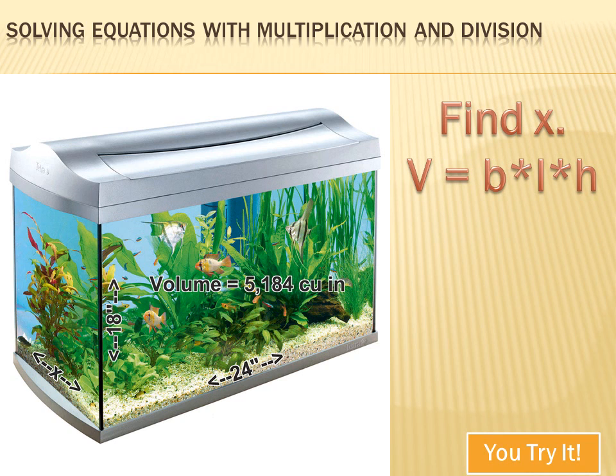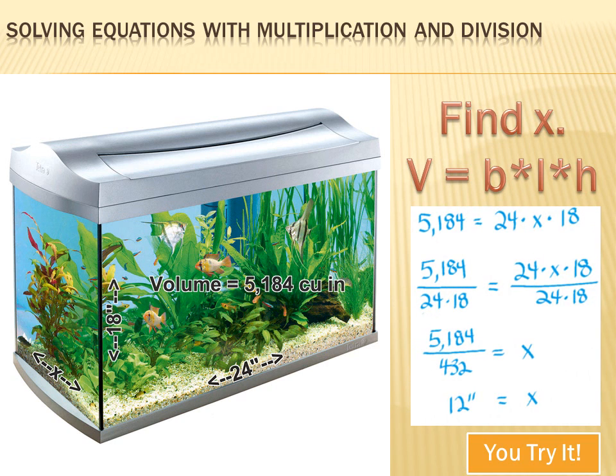The volume of this aquarium is 5,184 cubic inches. And we know that its width is 24 inches and its height is 18 inches. So find x. Well, first thing to do is write down the equation or the formula. V equals B times L times H. The base times the length times the height. And we know V, we know the volume is 5,184. And we know the base is 24 inches. And we know the height is 18 inches. So we can rewrite this equation. 5,184 equals 24 times x, which is the dimension we don't know and we're trying to solve for, times 18.